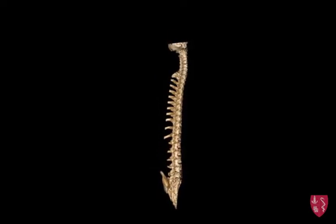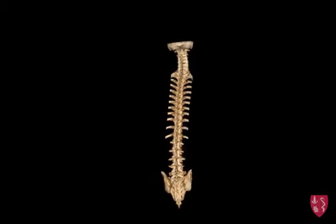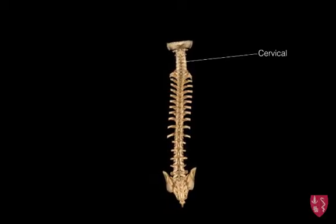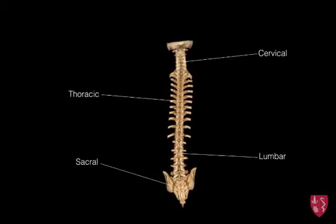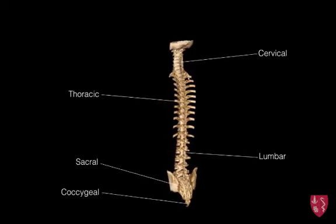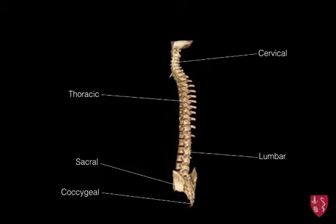The vertebral column can be divided up into cervical, thoracic, lumbar, sacral, and coccygeal vertebra.